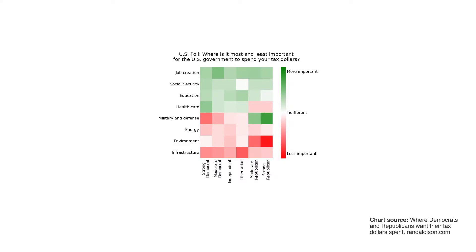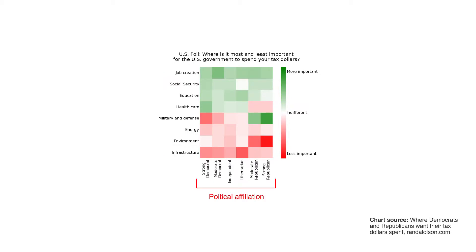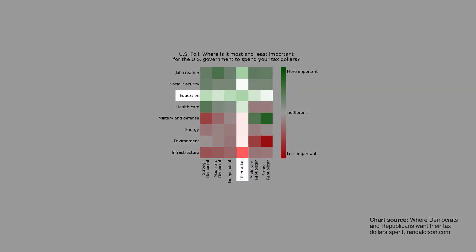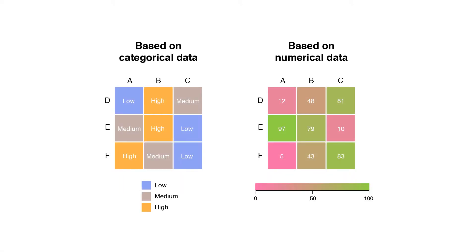Typically all the rows are one category, with labels displayed on the left or right side, and all the columns are another category, with labels displayed on the top or bottom. The individual rows and columns are divided into subcategories which all match up with each other in a matrix. The cells contained within the table either contain color-coded categorical data or numerical data based on a color scale. The data contained within a cell is based on the relationship between the two variables in the connecting row and column.